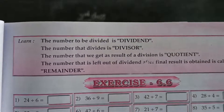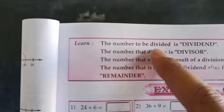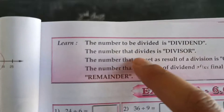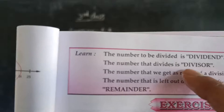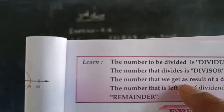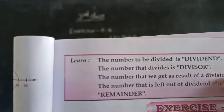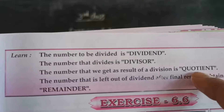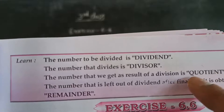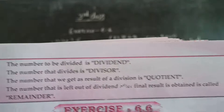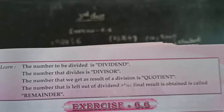See here on page number 53: the number to be divided is called the dividend. The number that divides is called the divisor. The number that we get as a result of division is called the quotient. And the final remaining answer is called the remainder.